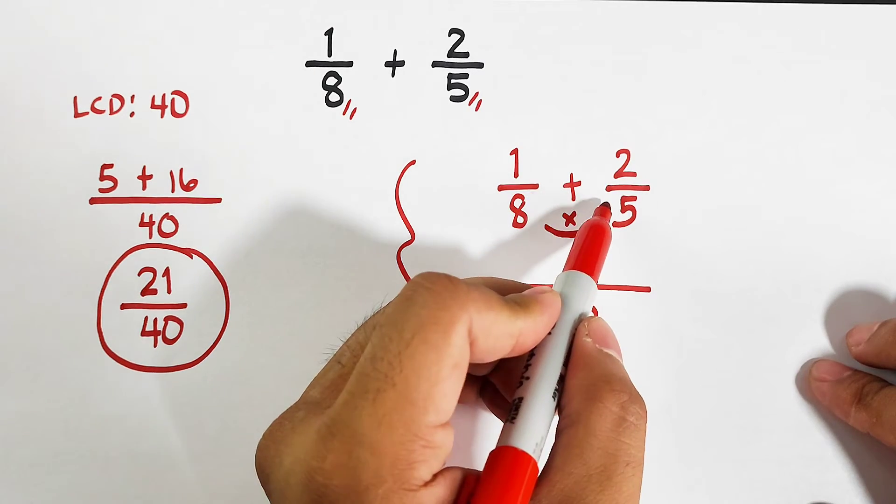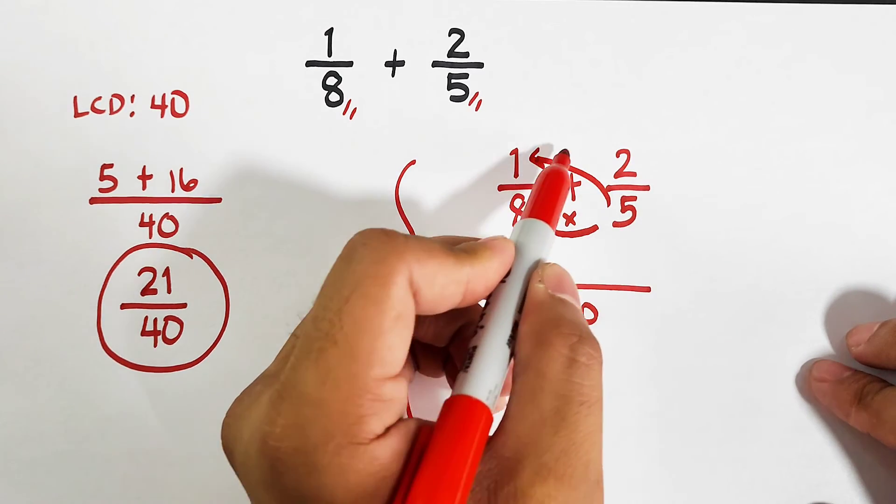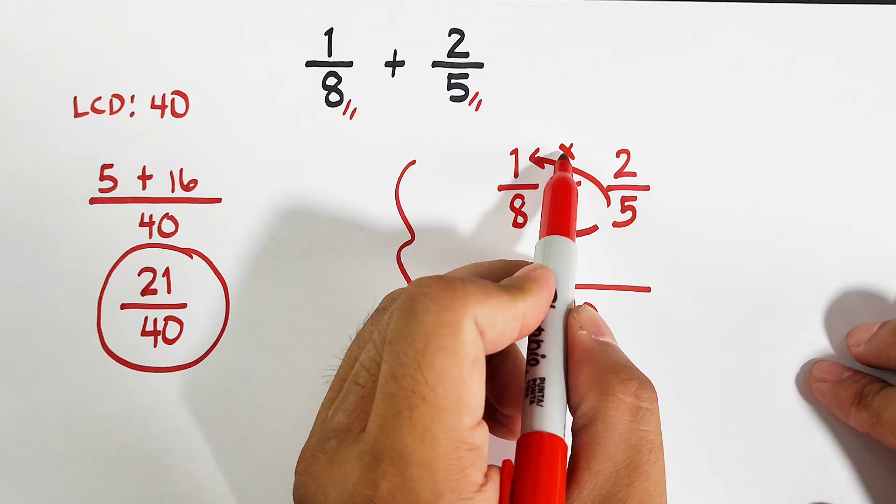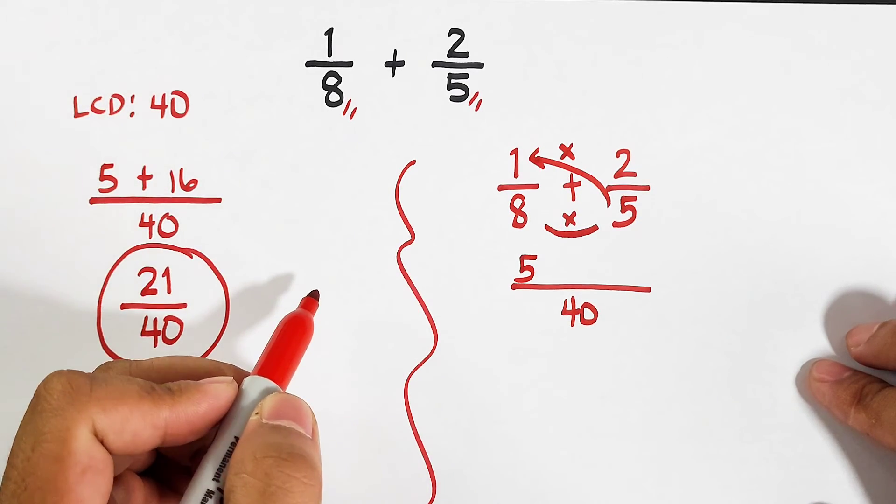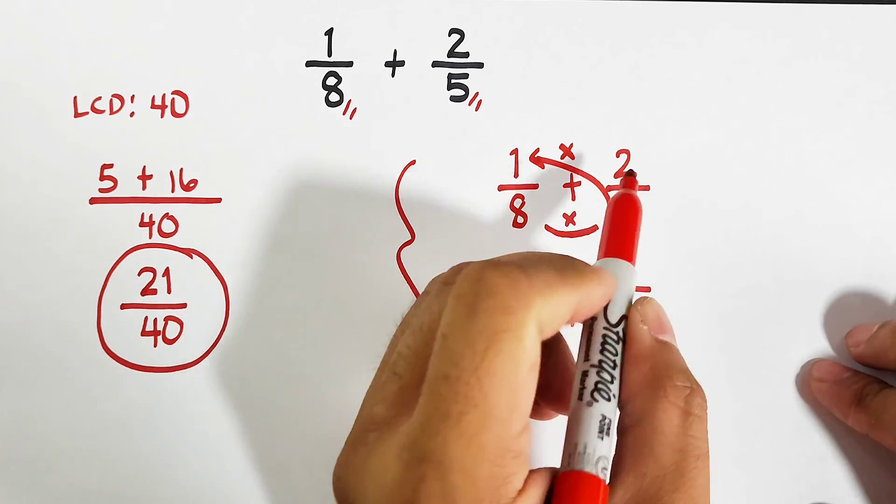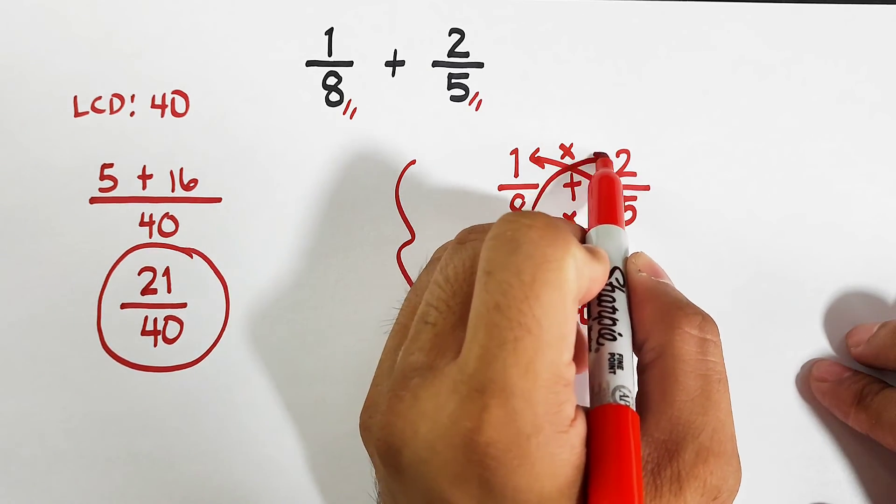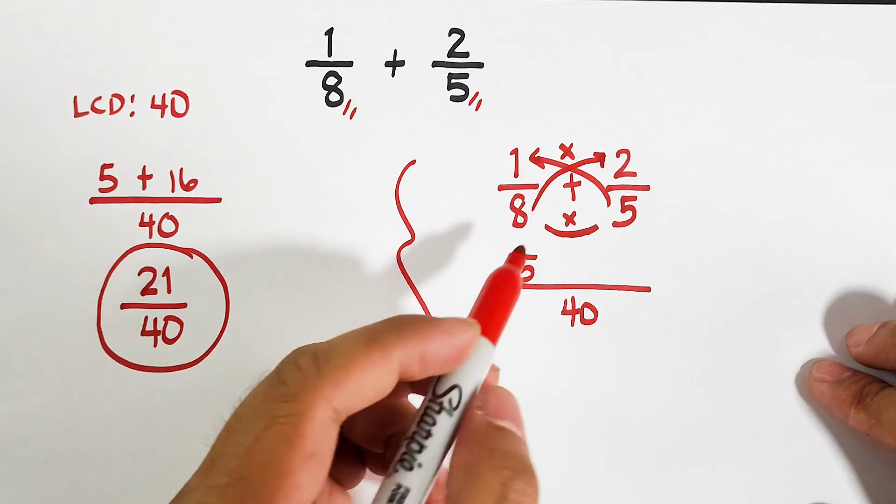I will cross multiply 5 and 1. 1 times 5. That is 5. I will cross multiply 8 and 2. 8 times 2. That is 16.